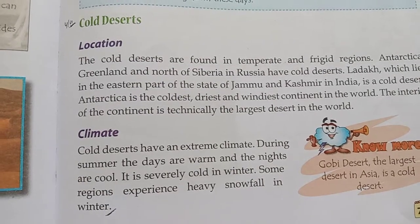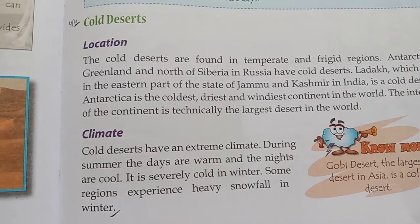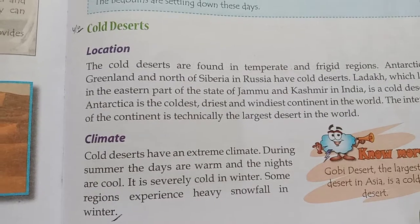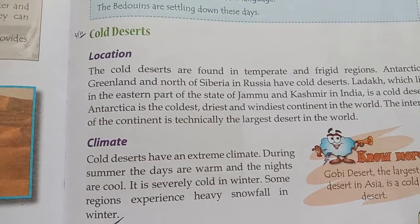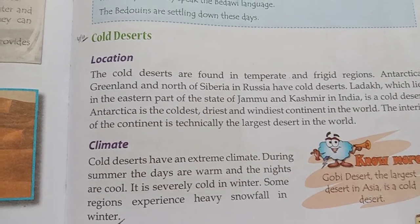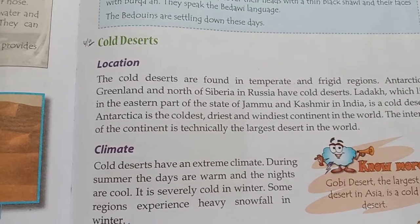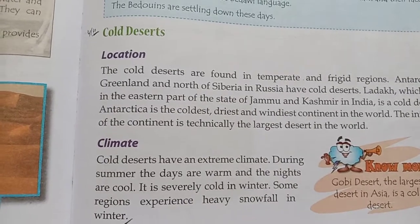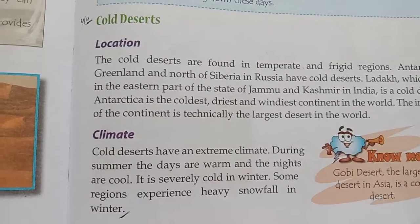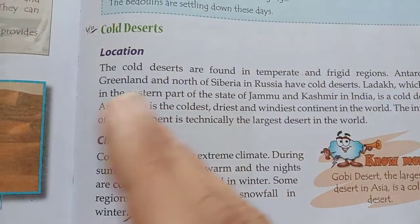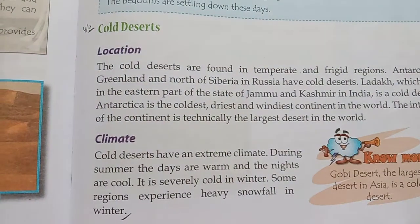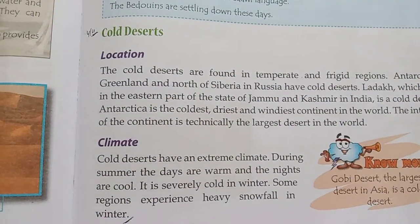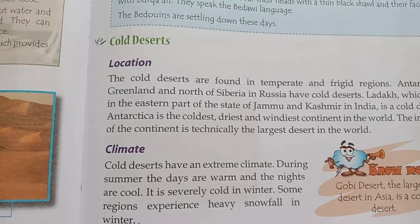During summer, days are warm and nights are cold. In the cold desert, it becomes extremely cold during winter, and there are many regions in the cold desert where there is heavy snowfall.